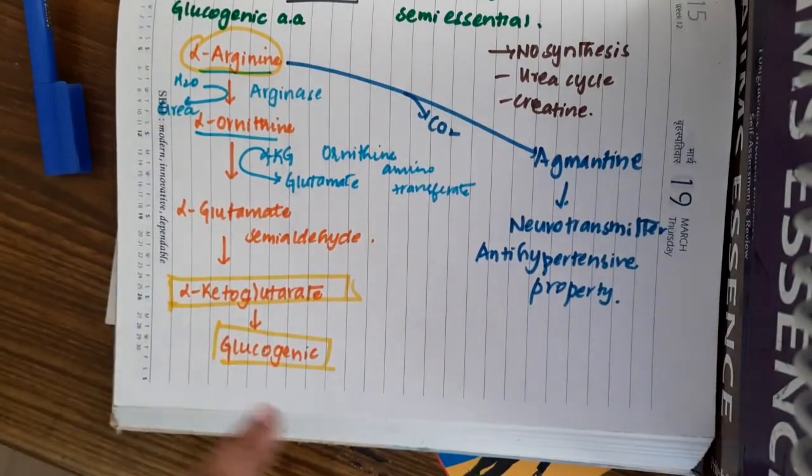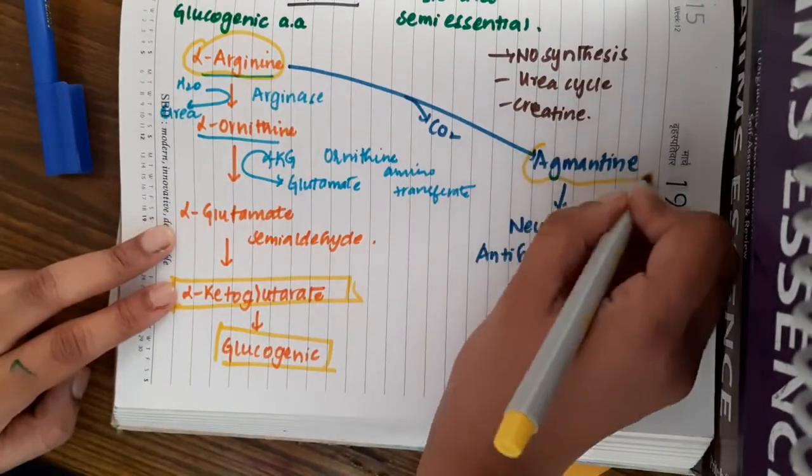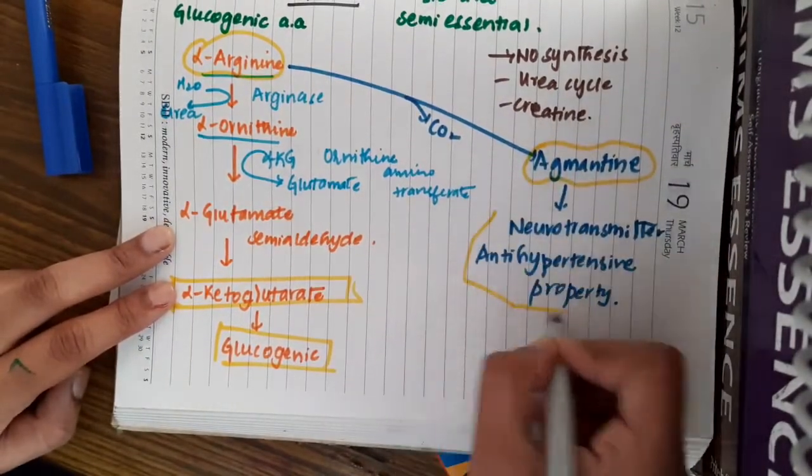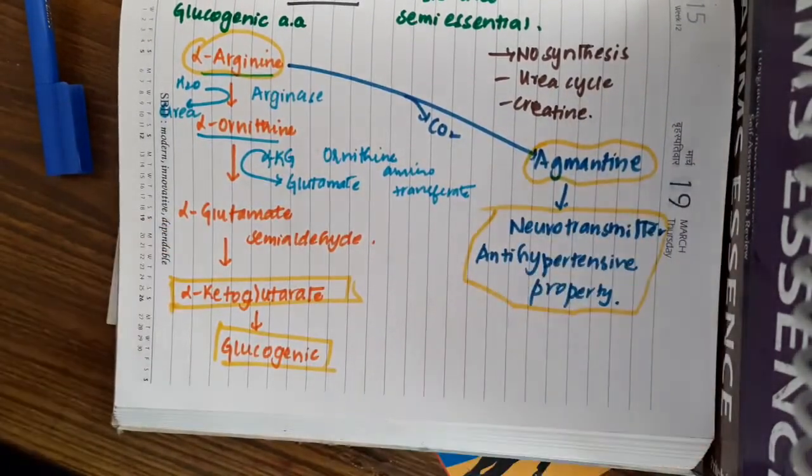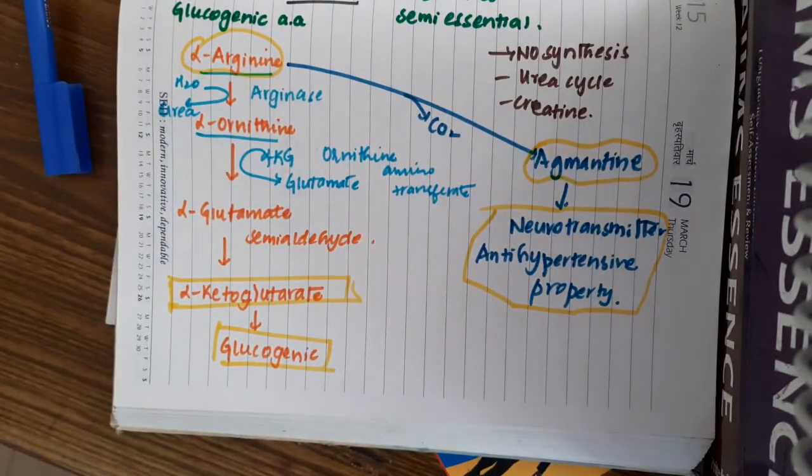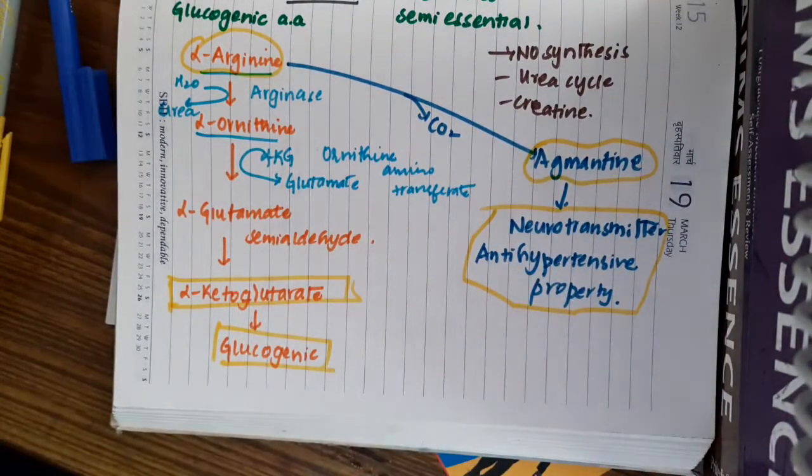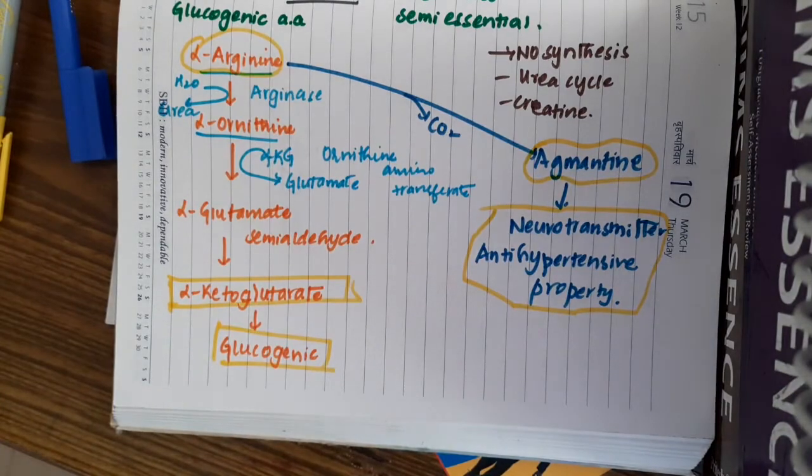And it becomes glucogenic. Whereas, this L-arginine also produces agmatine which will act as a neurotransmitter. These two at least you should remember. Thank you guys for watching my lecture.